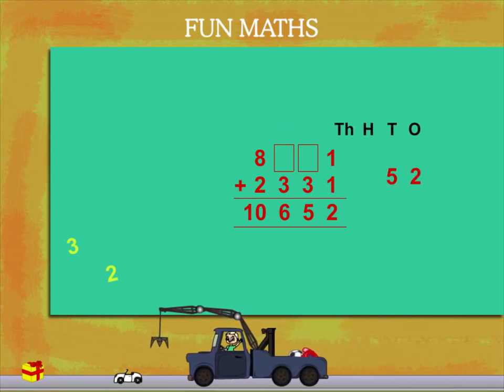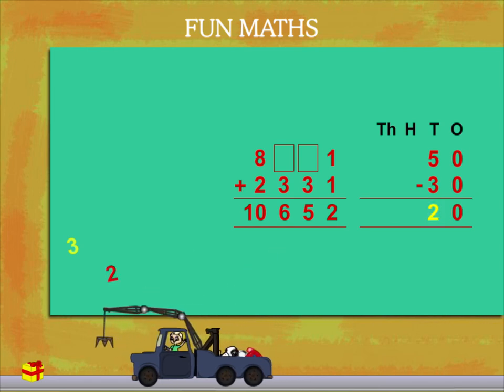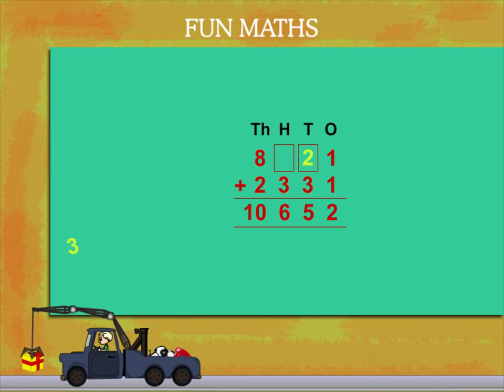From the sum, we take 5 tens and subtract 3 tens to get 2 tens. So, the yellow 2 will fit in the blank box of the tens.